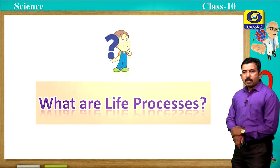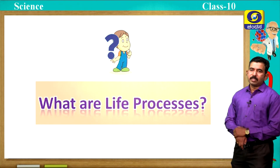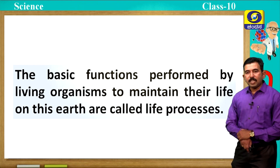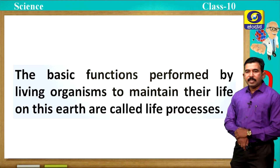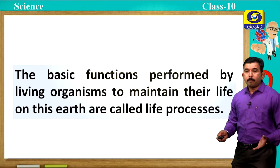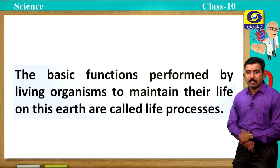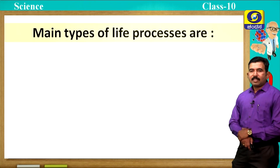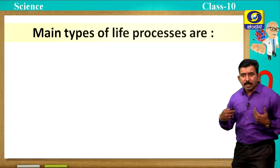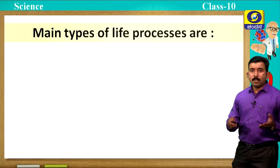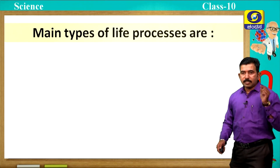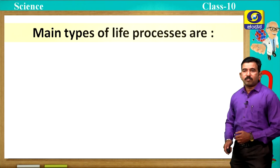What do you mean by life processes? The basic functions performed by living organisms to maintain their life on this earth are called as life processes. There are varieties of metabolic activities taking place inside the body of a living organism — these are called life processes. Let us study the main types of life processes. There are different types of life processes taking place inside the body of living organisms, whether unicellular or multicellular, and all these are very important for their survival.